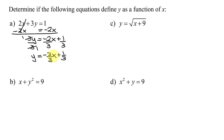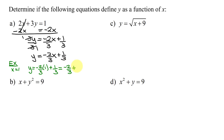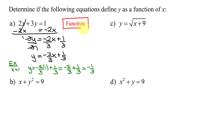If I plug in an x value, I'm only going to get one y value, because I'm going to take the x value, multiply it by -⅔, and add ⅓. Let's pick x = 1. y = -⅔ × 1 + ⅓ = -⅔ + ⅓ = -⅓. So, one x value gave one y value. In example A, this equation defines y as a function of x.